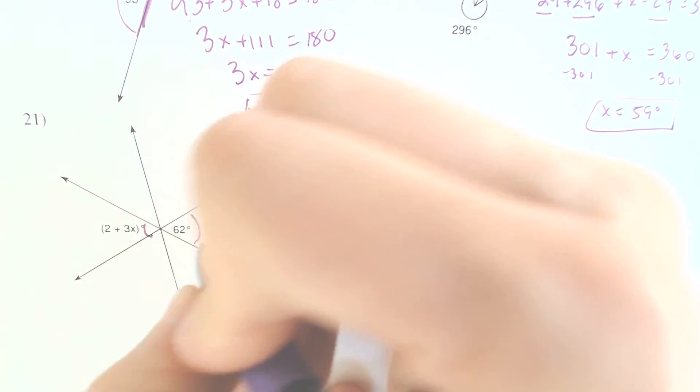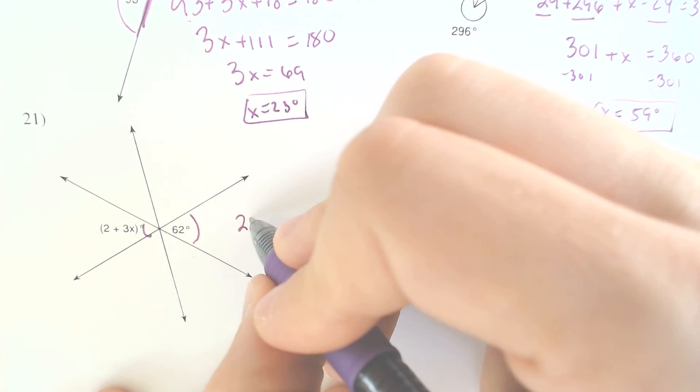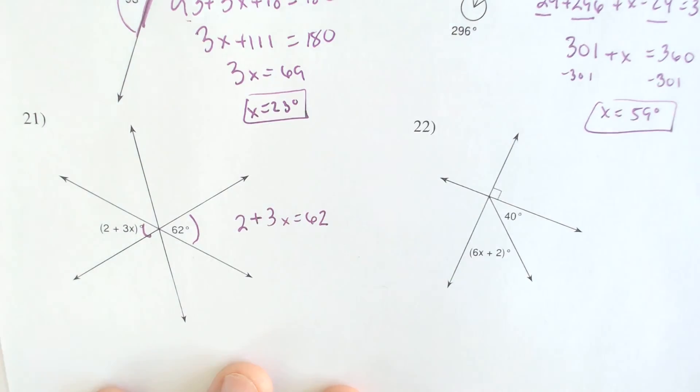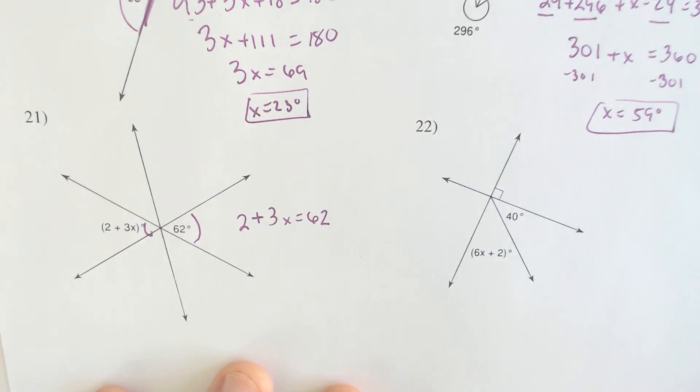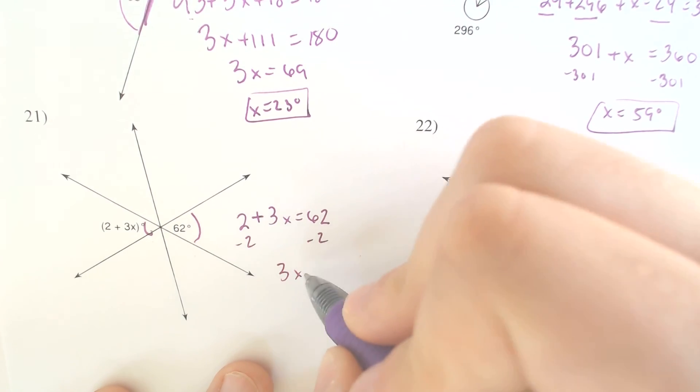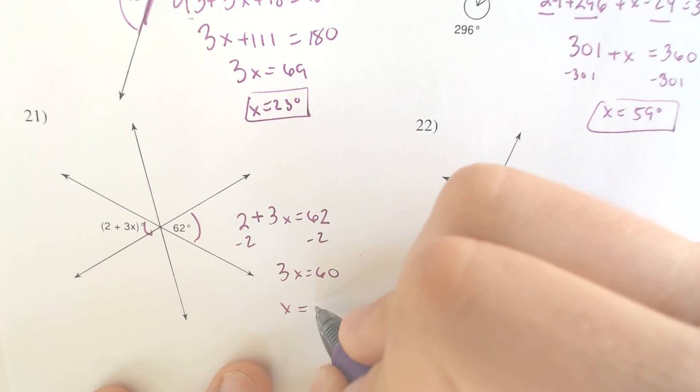These two are across from one another. These are my favorite because if they're across from one another, they equal each other. So we got 2 plus 3x is equal to 62. Why? Because they're across, which means they're vertical angles. Subtract the 2, subtract the 2. 3x would equal 60. Divide by 3. 60 divided by 3 is 20 degrees.